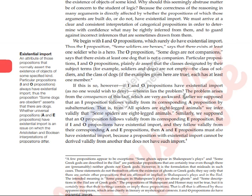If I and O propositions have Existential Import, wherein lies the problem? The problem arises from the consequences. Earlier, we have seen the traditional square of opposition — that A and I (the affirmatives) and E and O (the negatives) are subalterns. The relation between them is subalternation. That means, for example, if A is true then we can infer that I is also true. From 'All spiders are eight-legged animals' we infer that 'Some spiders are eight-legged animals.' Similarly, 'All humans have two legs,' so we can say 'Some humans have two legs.'